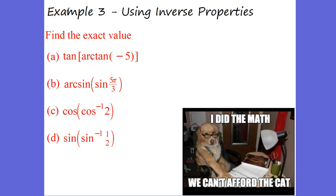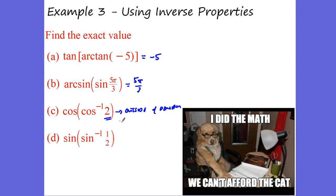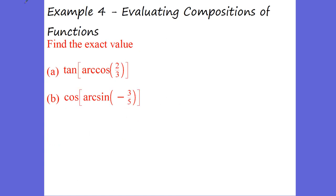Let's use these inverse properties to solve. Tan of arctangent of negative 5 gives me negative 5 — they cancel each other out. Arcsine of sine of 5π over 3 gives 5π over 3. Cosine of arccosine of 2 — remember you can't have arccosine of 2, so there's no answer because this is outside of the domain; there's no angle where cosine equals 2. And sine of arcsine of 1 half? That's 1 half. These are easy — the functions cancel out.